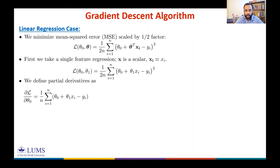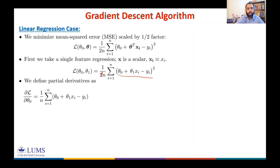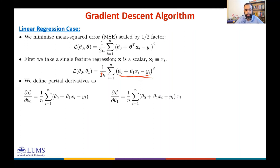Similarly, the partial derivative with respect to θ₁ is (1/n) Σᵢ (θ₀ + θ₁xᵢ − yᵢ) · xᵢ. The factor of two cancels with the one-half, and when taking the derivative of the inner term with respect to θ₁ you only get xᵢ. So the partial derivative of the loss function with respect to θ₁ is (1/n) Σᵢ (θ₀ + θ₁xᵢ − yᵢ) · xᵢ.